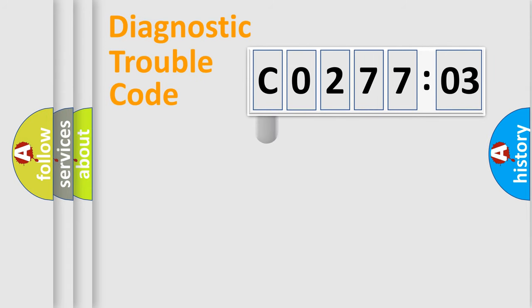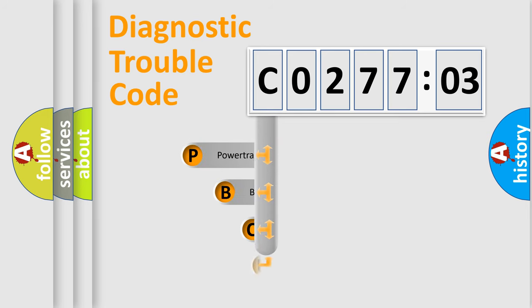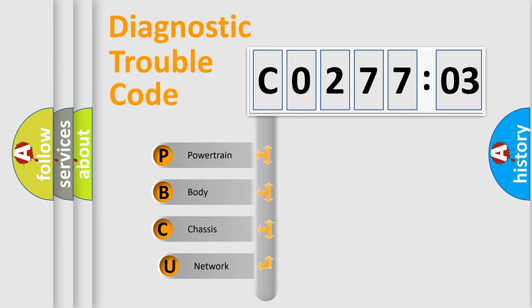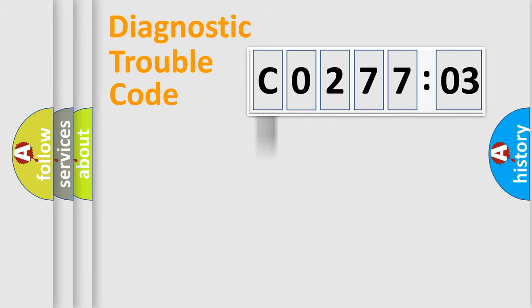First, let's look at the history of diagnostic fault code composition according to the OBD2 protocol, which is unified for all automakers since 2000. We divide the electric system of the automobile into four basic units: Powertrain, Body, Chassis, and Network.